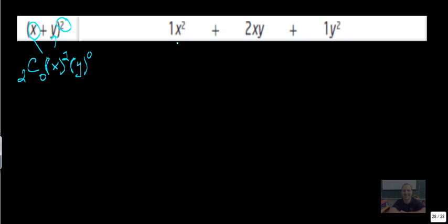So this is, I know it doesn't look like a shortcut right now to get x squared, but 2 choose 0 is 1, x squared is x squared, y to the 0 is 1. That simplifies to x squared.